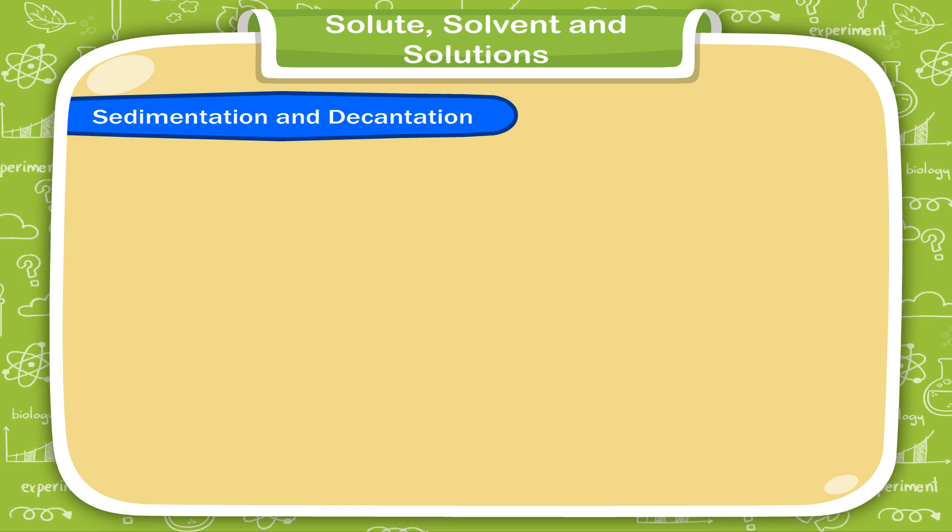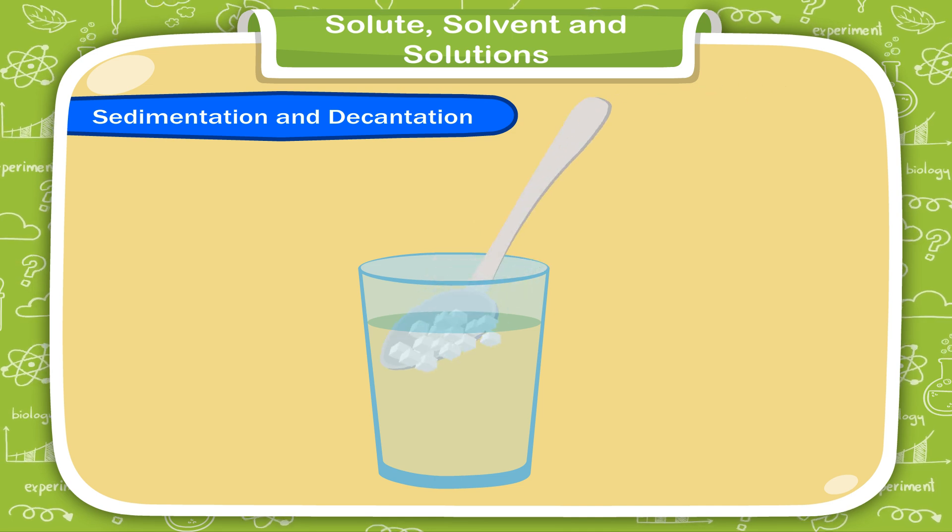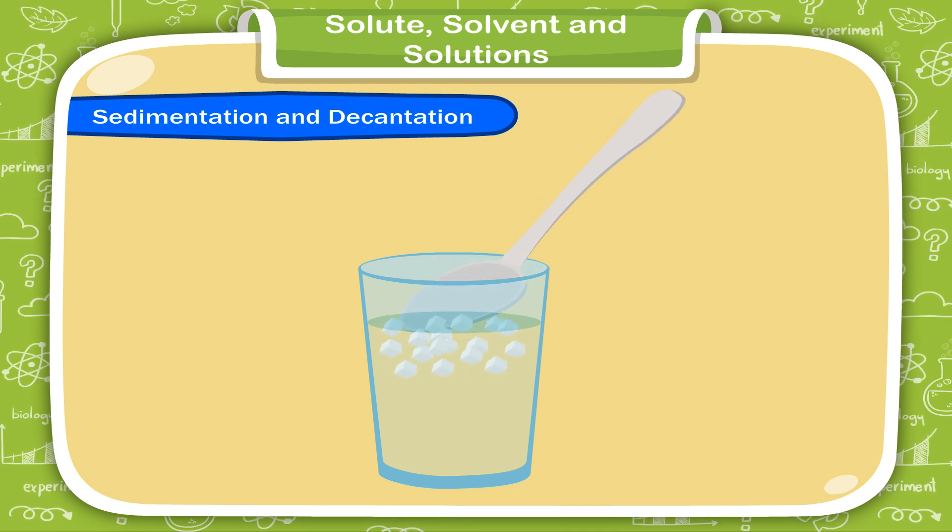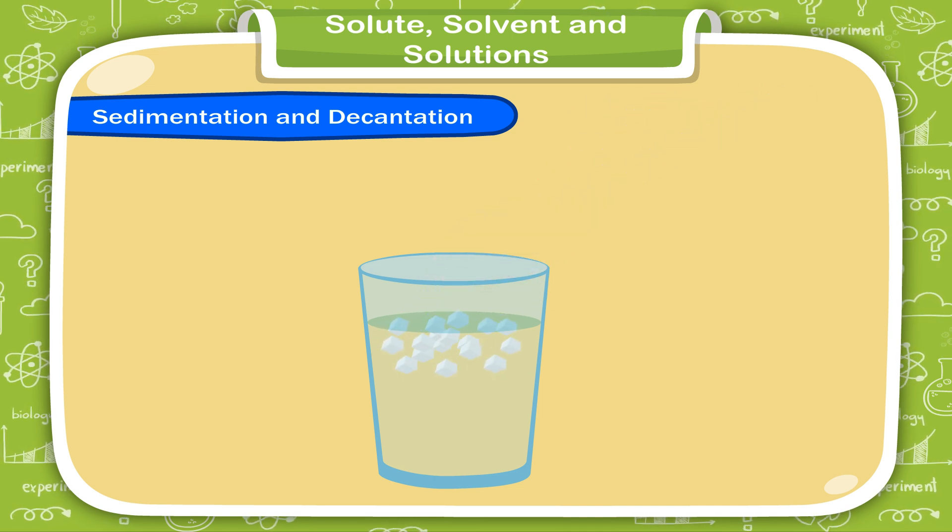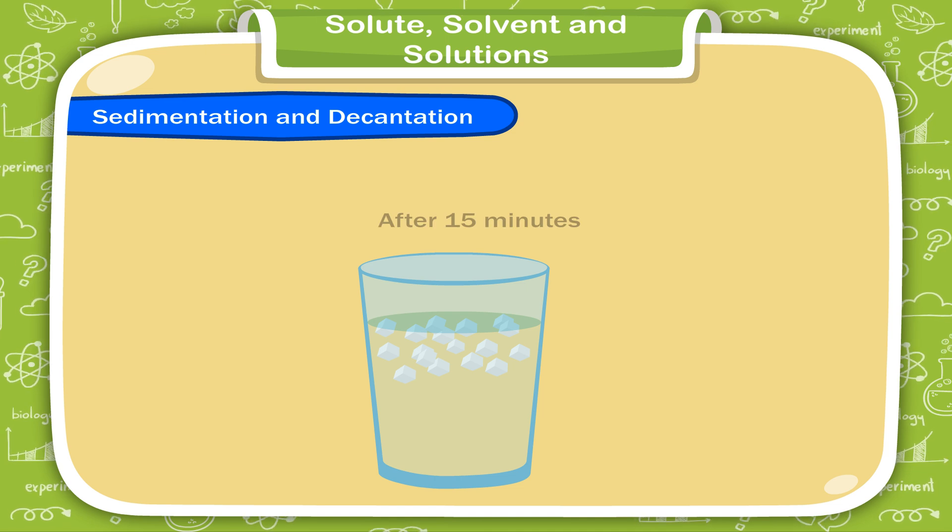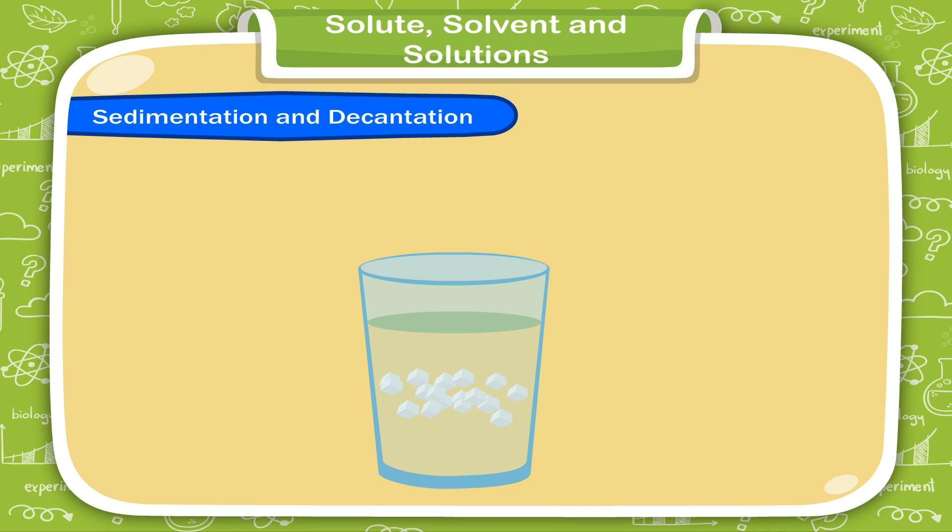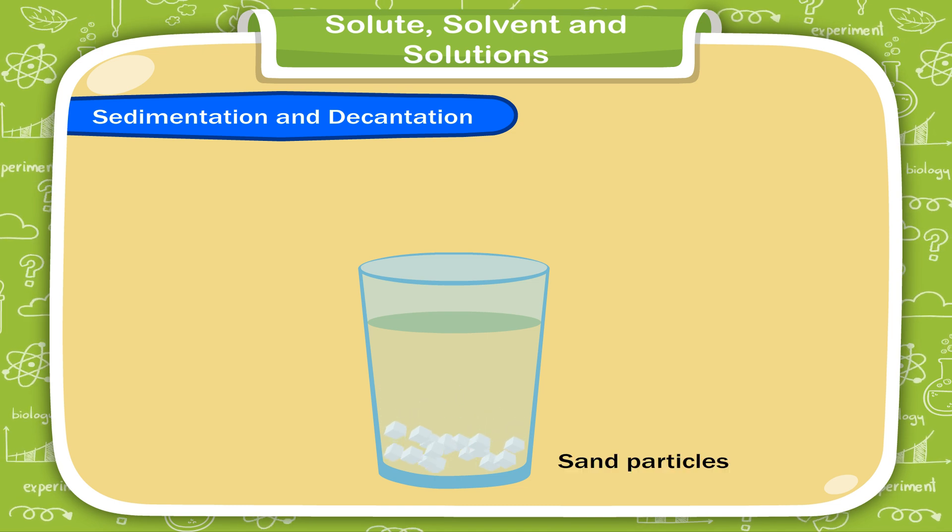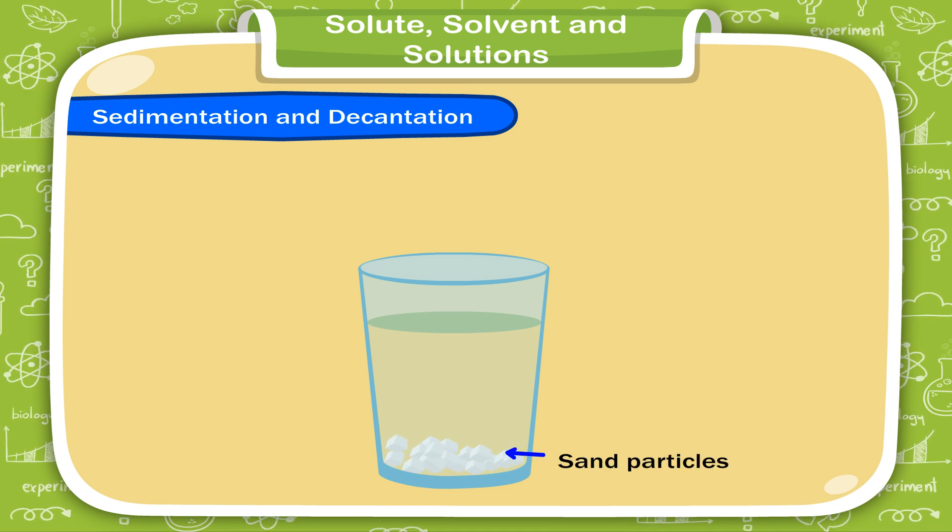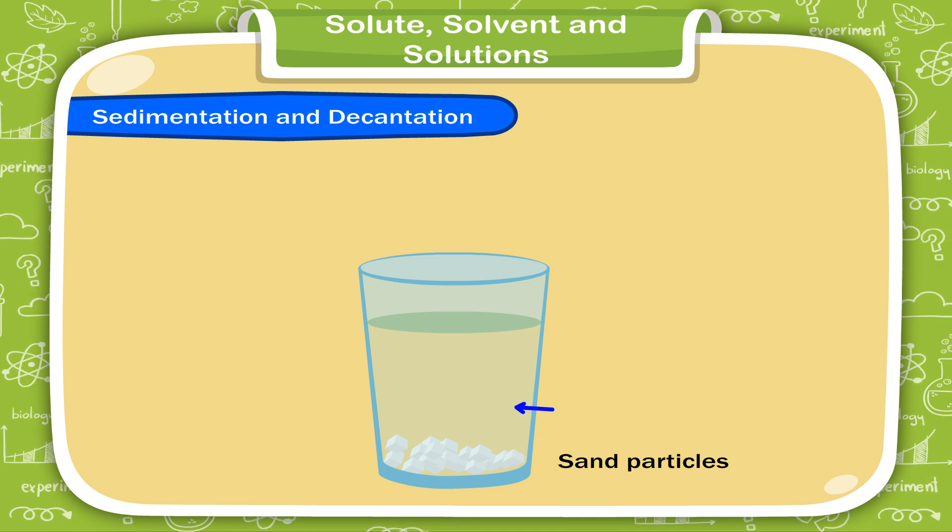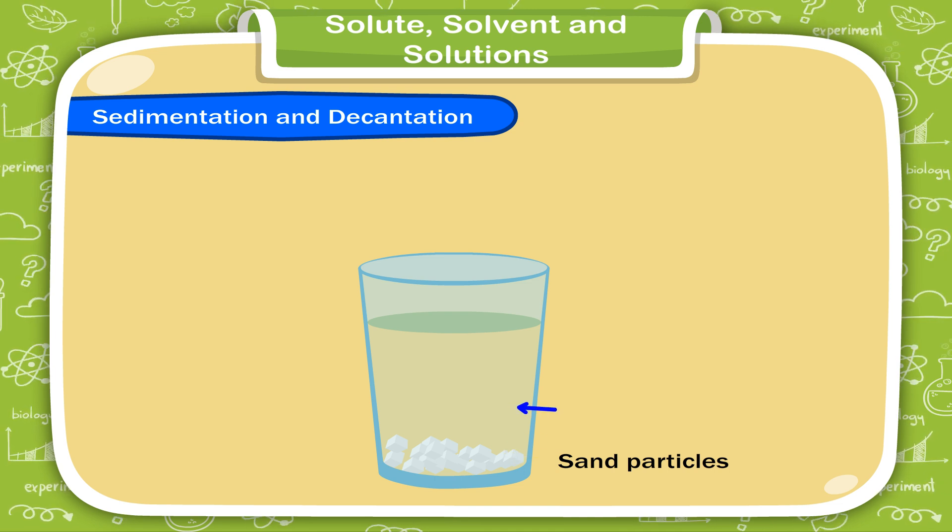Sedimentation and decantation. Add some sand to a glass of water and stir it. Leave it for 15 minutes. Now, observe the glass carefully. You will see the sand particles settled at the bottom of the glass. The water above the sand particles is clean.